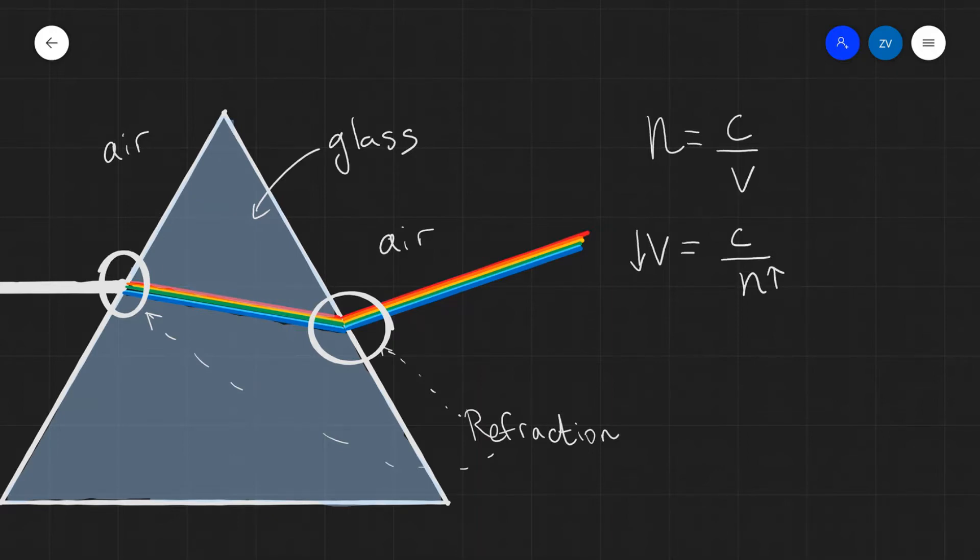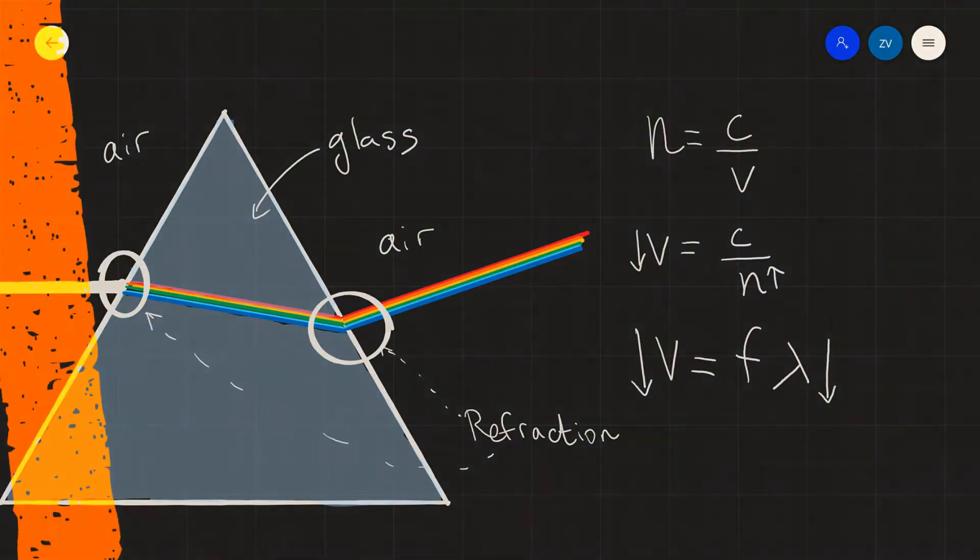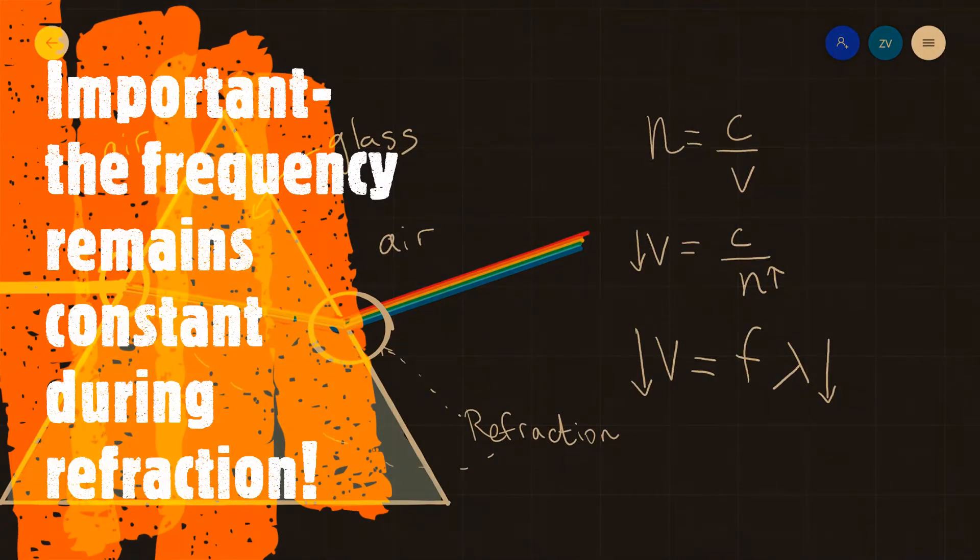Now the speed of light, or the speed of any wave, is also given by the wave equation, that the speed of a wave is equal to its frequency multiplied by the wavelength. Now because the speed of light decreases, one of those quantities will have to change, or both of those quantities will have to change. What actually happens is that the wavelength decreases, but the frequency remains constant.